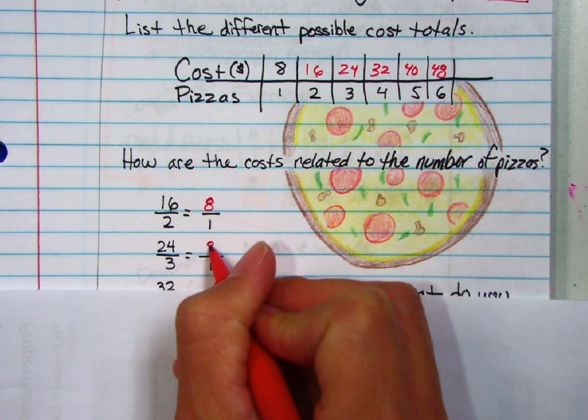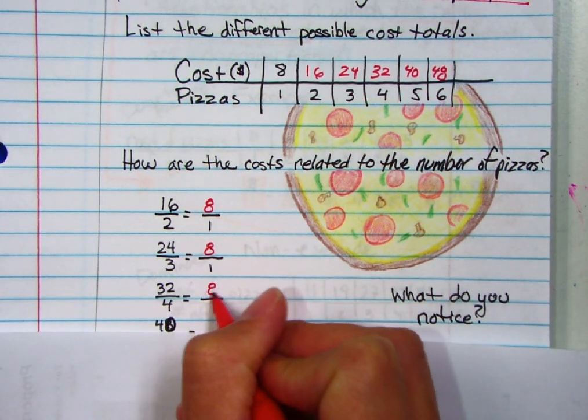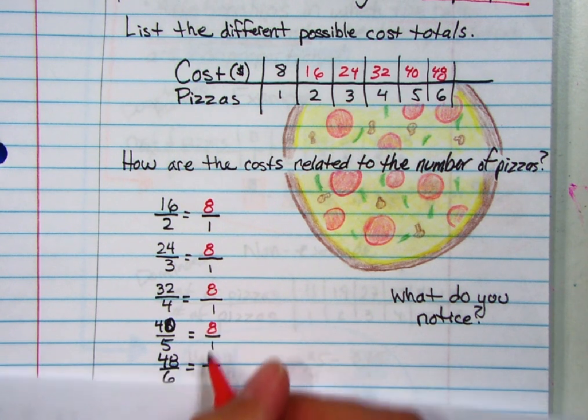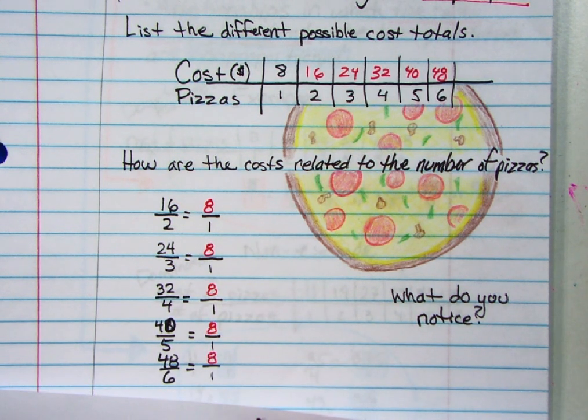Thirty-two dollars divided by four, same. Next one's the same. Next one's the same. So all of them are giving eight over one.